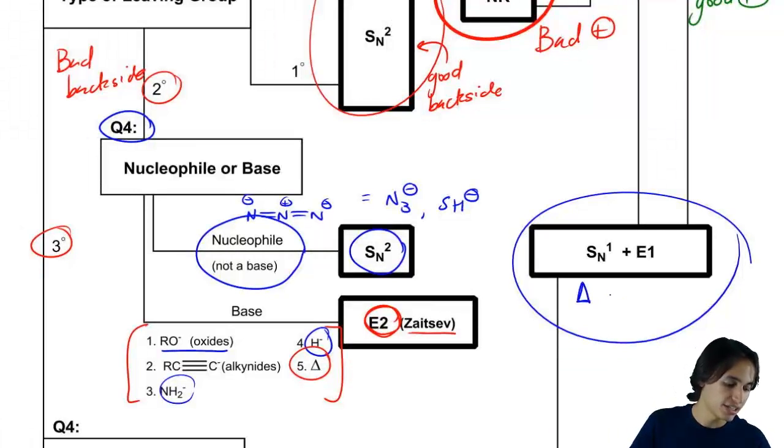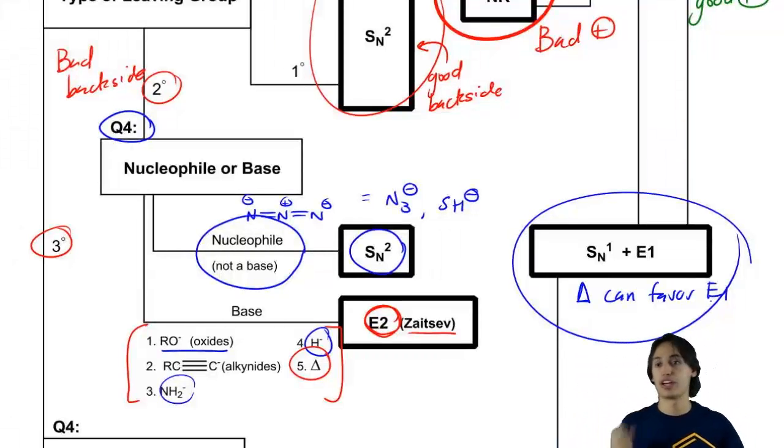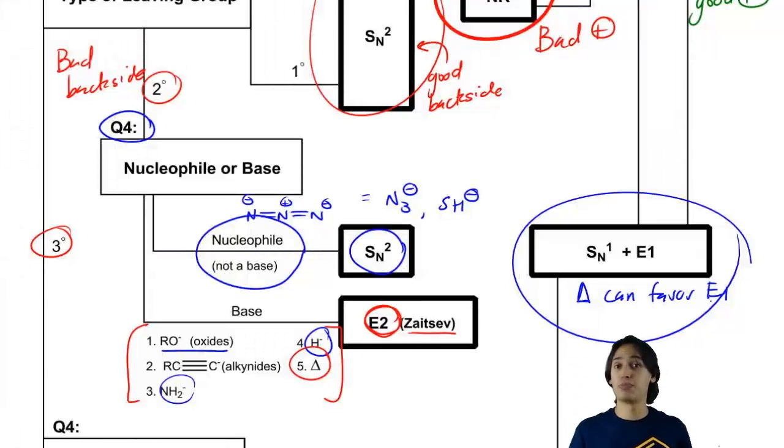Now there is one thing that we could do to make it favor one over the other. And that is heat. I'm just going to put here heat can favor E1. So that's true. For example, if I ran it with these conditions where I had a neutral nucleophile, a tertiary alkyl halide and then if I jack up the heat to like 50 degrees Celsius, then that can favor E1 over SN1 but you're still going to get a mixture of products. It's just you're going to get a little bit more E1.